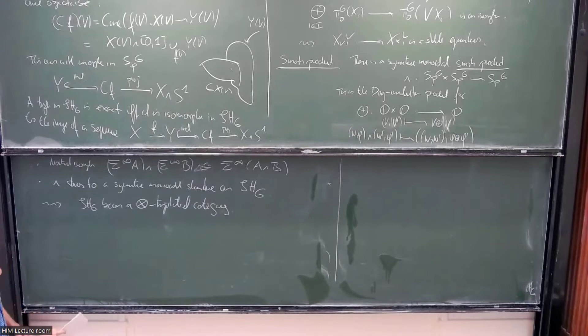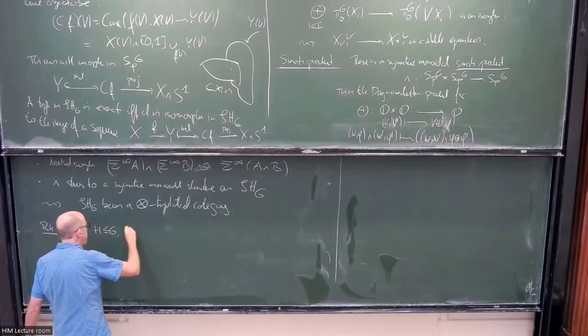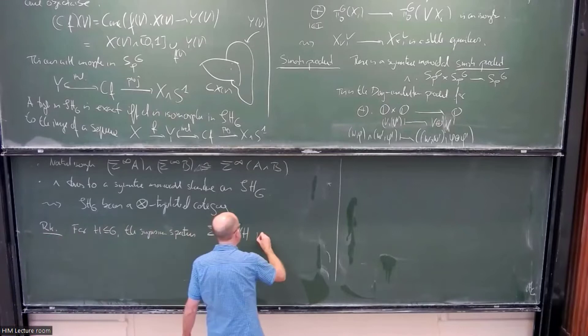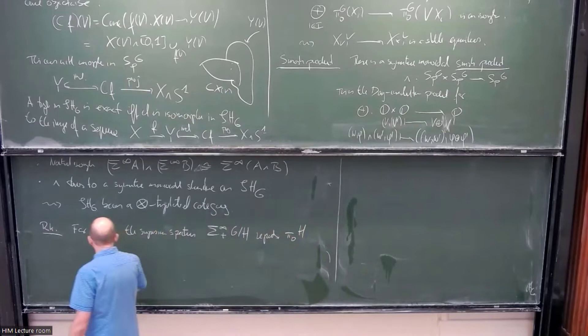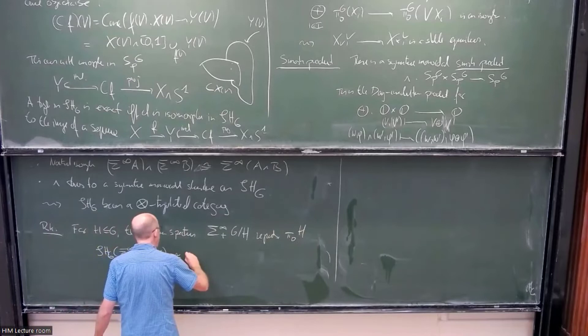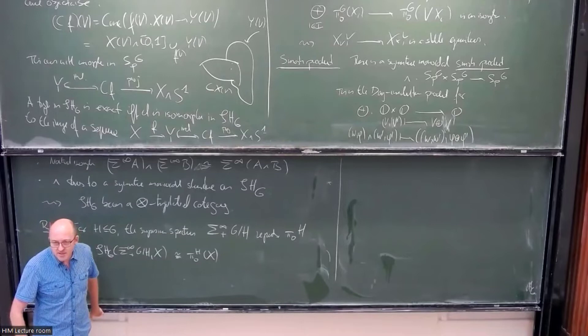An important remark is that the homotopy group functor pi_0^H for all subgroups H is representable in this category. For a subgroup H of G, the functor pi_0^H is represented by sigma-infinity-plus of G/H. In other words, there is a natural isomorphism between morphisms in SHG from sigma-infinity-plus(G/H) to X and pi_0^H(X). To specify such an isomorphism by Yoneda means giving a universal element e_H in pi_0^H-equivariant of sigma-infinity-plus(G/H). This element is given by an H-equivariant map from S^0 to S^0 smash (G/H)_+, sending the non-basepoint zero to zero smash the preferred coset eH.